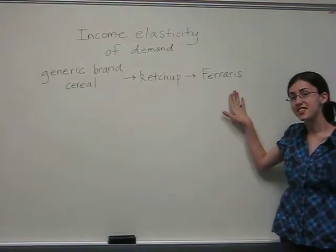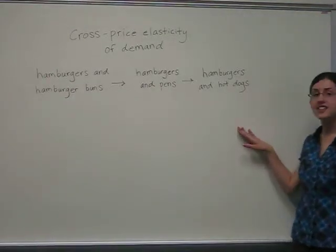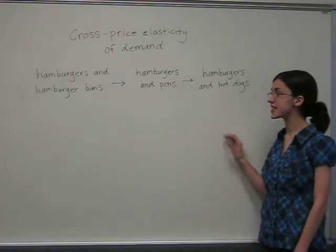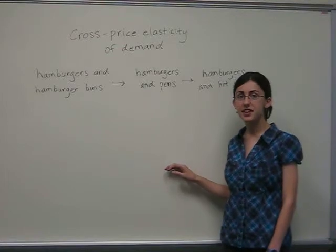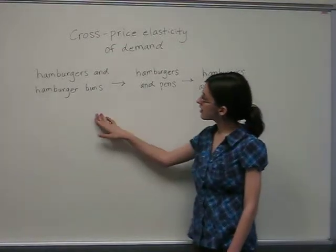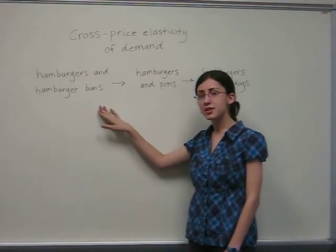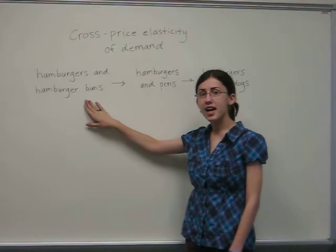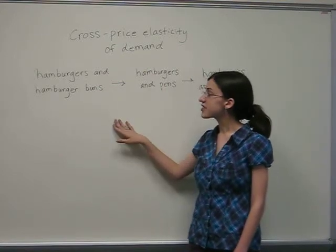Finally, cross-price elasticity of demand can help us determine whether goods are complements or substitutes. Here, we will be dealing with the change in price of hamburgers compared to other goods. If the price of hamburgers increases, the demand for hamburger buns will decrease, thus making them complements. Their cross-price elasticity of demand will be negative.